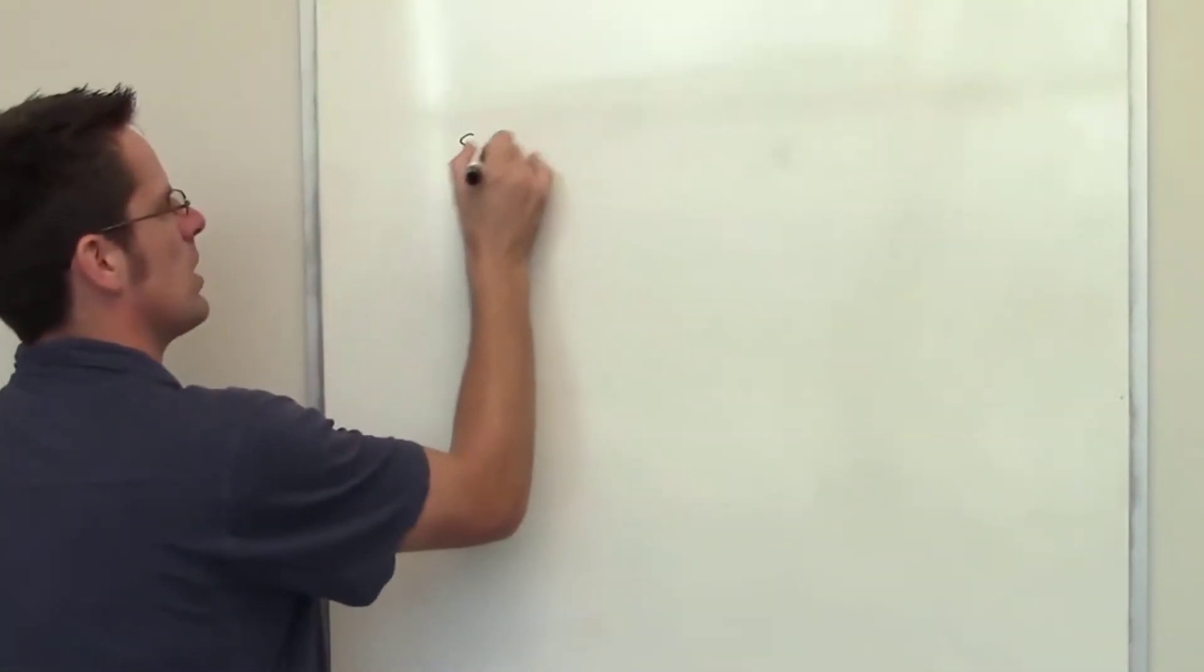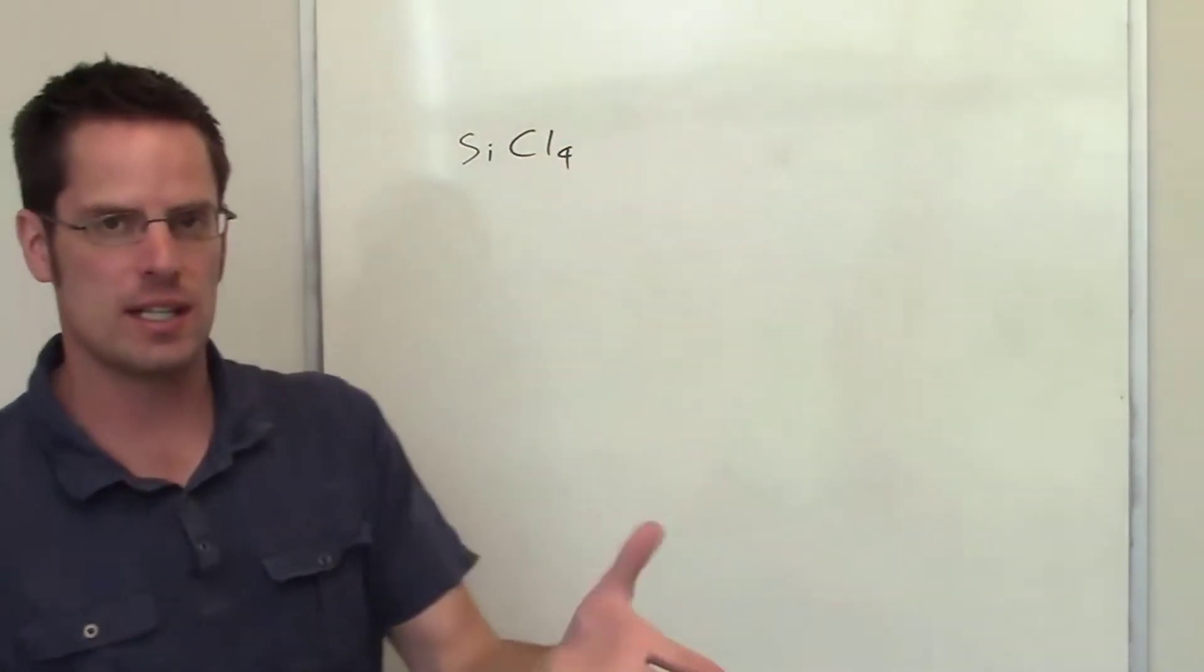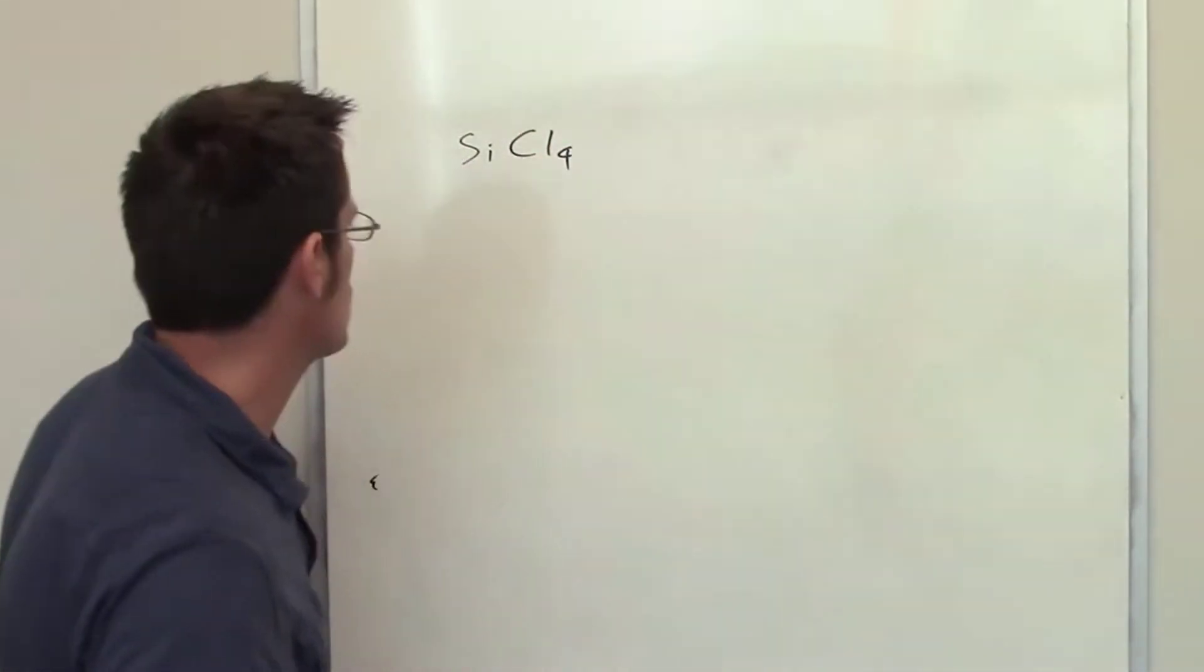This question asks us to use Lewis symbols and structures to draw the formation of silicon tetrachloride, this molecule right here, from individual silicon and chlorine atoms. Here's the way that's done.